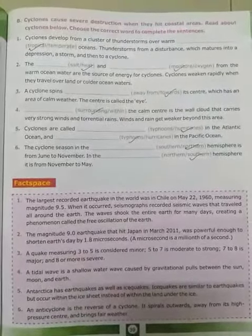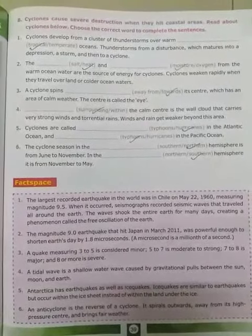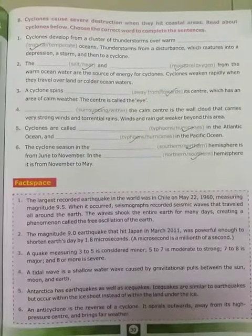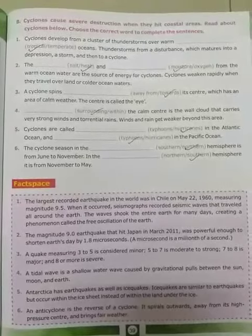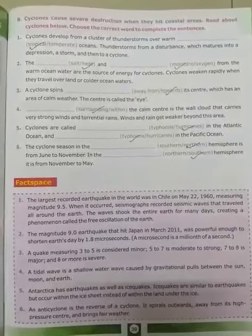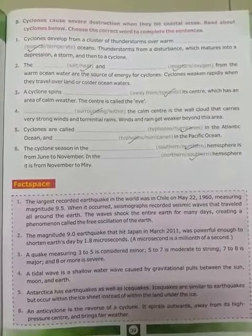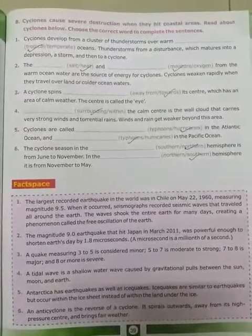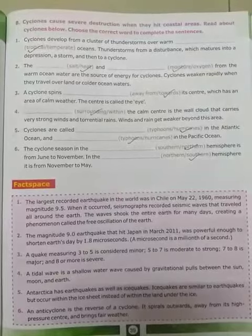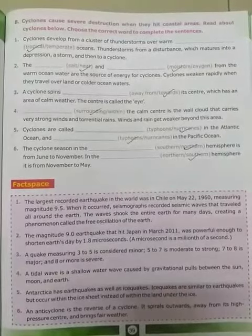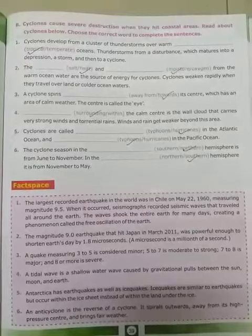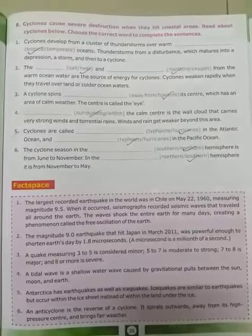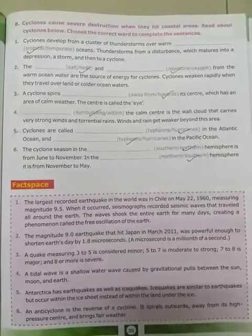First, cyclones develop from a cluster of thunderstorms over warm, tropical oceans. Second, thunderstorms form a disturbance which matures into a depression, a storm and then to a cyclone.